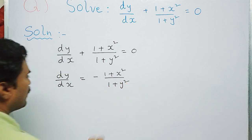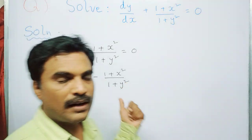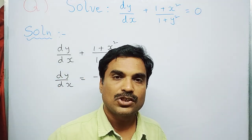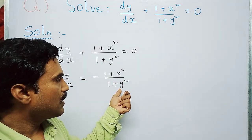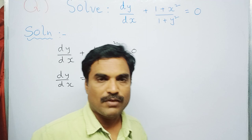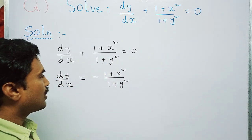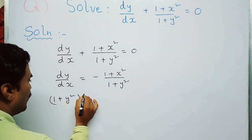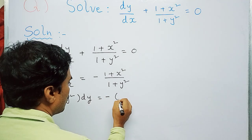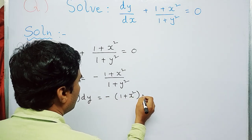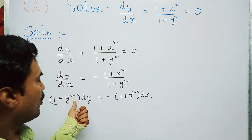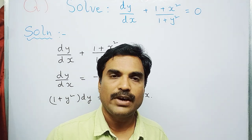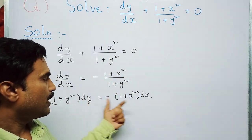Observe that on the right-hand side, (1 + x²) is a function of x and the denominator (1 + y²) is a function of y. So we take (1 + y²) with dy and (1 + x²) with dx. Cross-multiplying gives: (1 + y²) dy = −(1 + x²) dx. Now we have the function of y with dy and the function of x with dx — this is the variable separable method.